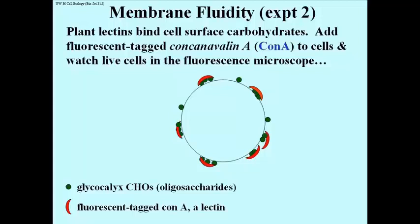The result in the fluorescence microscope is to create patches of fluorescence around these cells — that's called patching, sometimes called capping. The clear implication is that protein components of the membrane can move along the surface of the membrane: they are fluid.